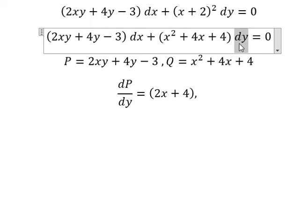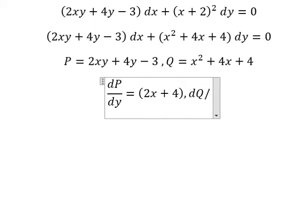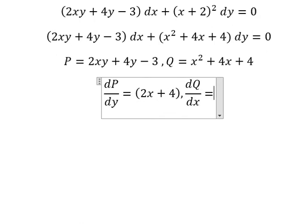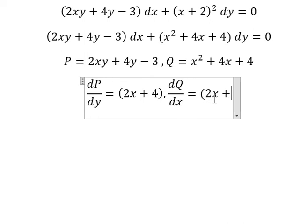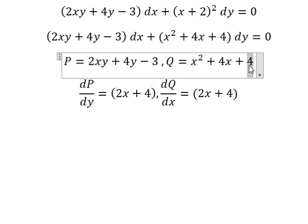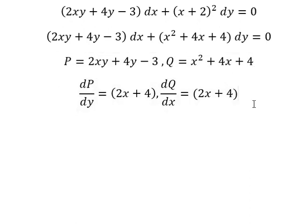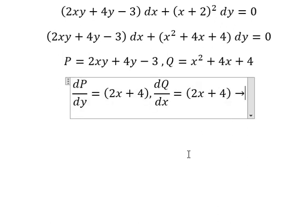Here we have dy, which means we need to do first the partial derivative of Q with respect to x. We have number one, and that gives us number one — about number four. For the constant, you get zero. We can see that they are the same, which means it is exact.